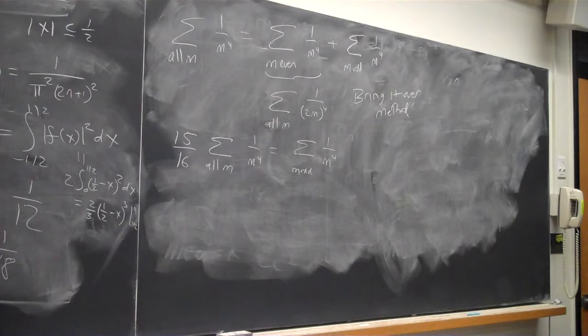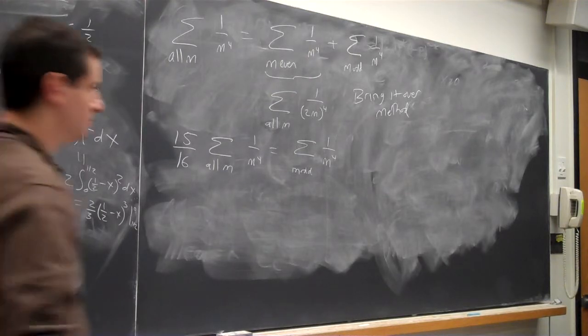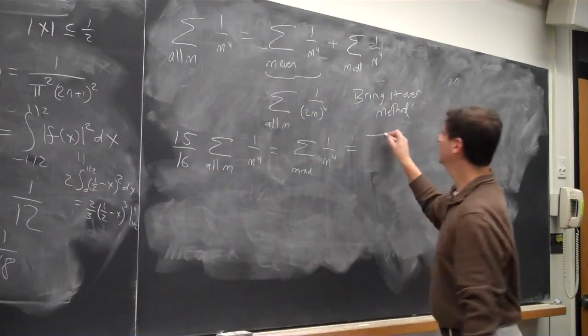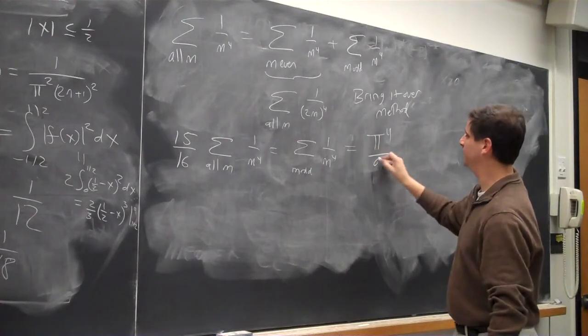So now, do we know what the sum of 1 over m to the 4th is when m is odd? Yeah, it's going to be pi to the 4th over 2 times 48. So this is pi to the 4th over 96.